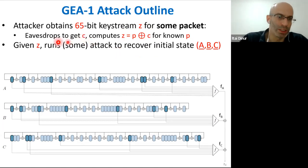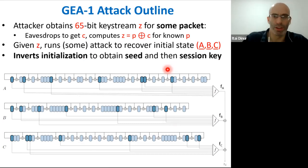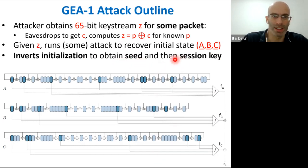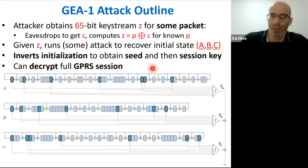With the 65-bit keystream, the goal of the attack is to run a state recovery attack and recover the initial state ABC of the registers. Given the initial state, the attacker can invert the initialization process of GEA1 and obtain the seed, then obtain the session key. Given the session key, by continuing to eavesdrop, the attacker can decrypt the full GPRS session.